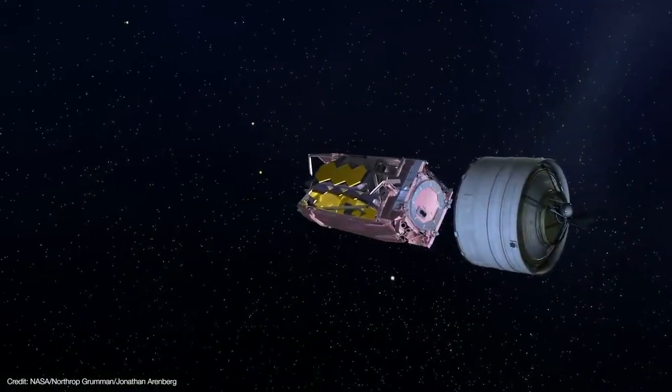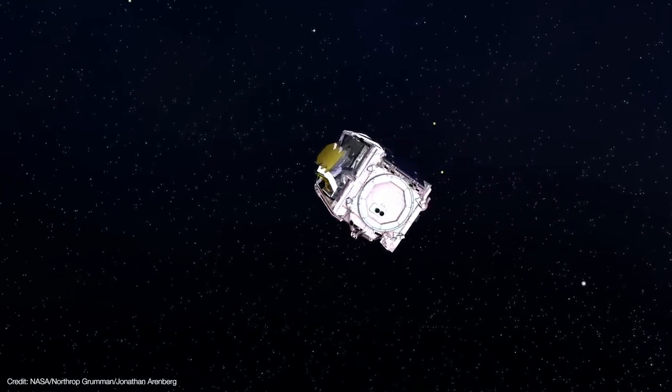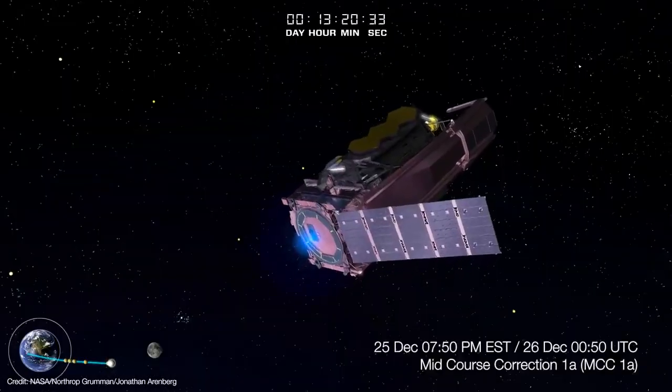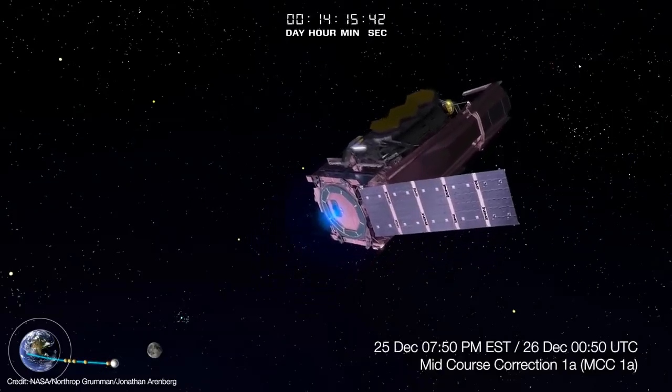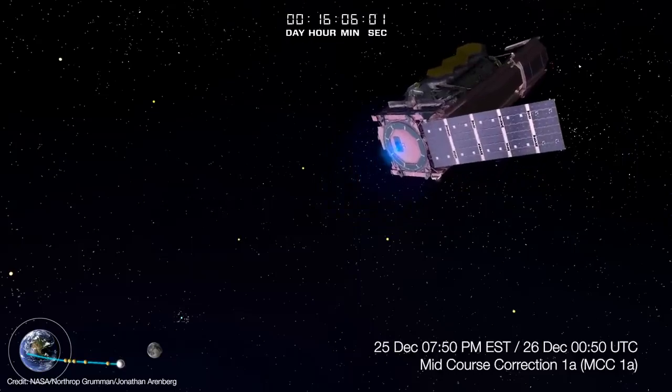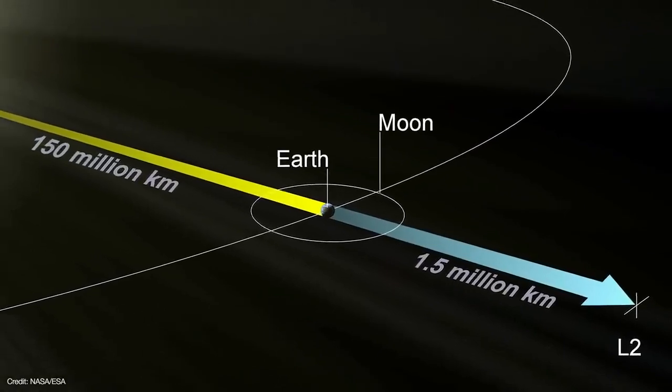And that's why the Ariane 5 launch was intentionally designed to slightly undershoot and let the spacecraft do a series of mid-course correction burns. The first two, MCC-1A and MCC-1B, were executed on the way out to L2. However, arriving even just shy of L2 leaves us with another problem.